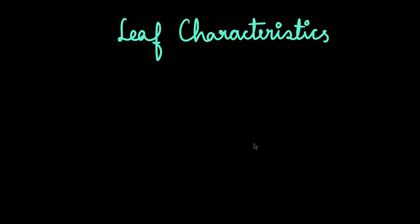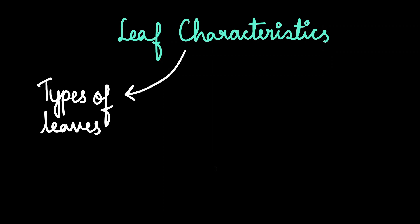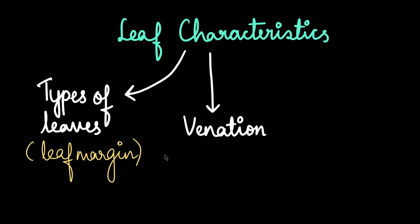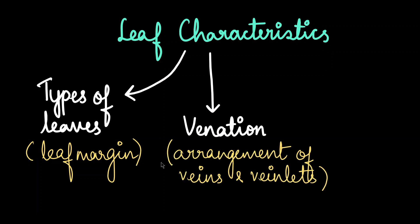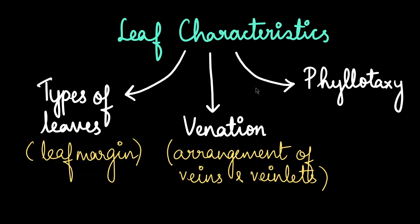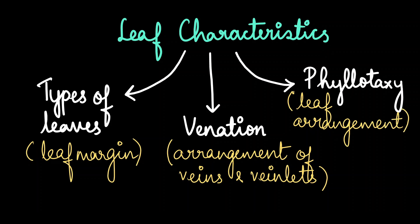There are plenty of leaf characteristics, but we are going to focus on three main characters. The first is the types of leaves, which is based on the leaf margin. The second is venation — venation is the arrangement of the veins and veinlets on the leaves, so the pattern of the veins on the leaf surface. And third, we have phyllotaxy. Phyllotaxy is the arrangement of leaves on a stem.